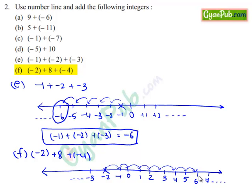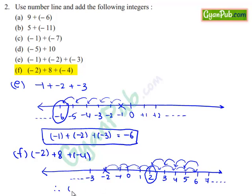For this, we are adding minus 4, which means we have to move 4 steps to the left of 6: 1, 2, 3 and 4. We reach plus 2 on the number line. So, when we add minus 2 and 8 and minus 4, we reach plus 2 on this number line.